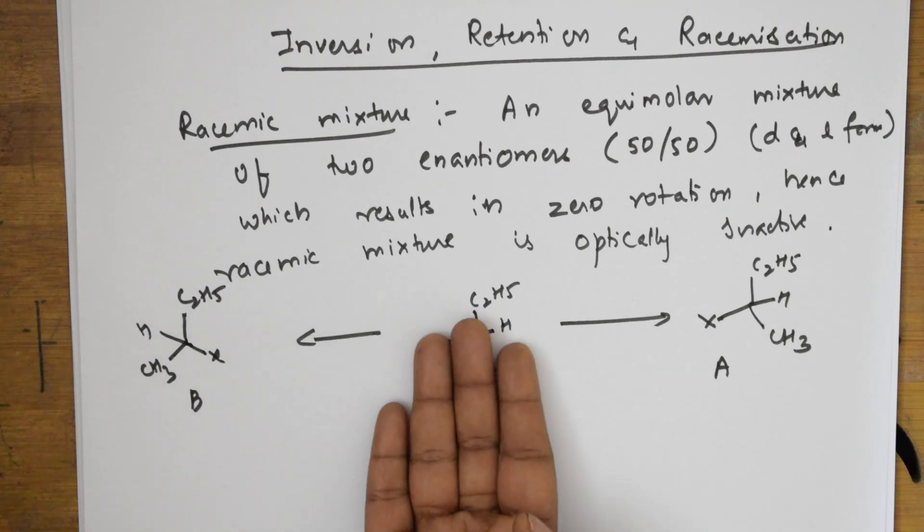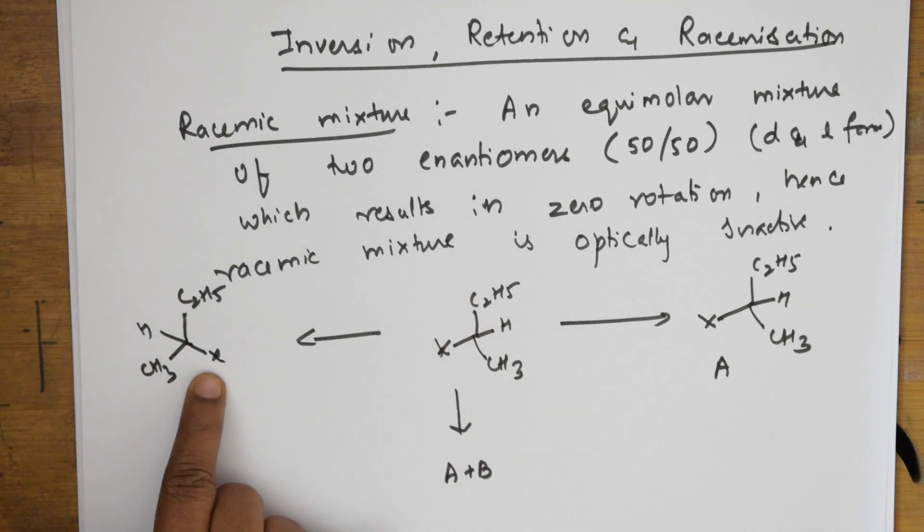In this case, the configuration is inverted. Then this is called inversion. The combination of these two is called a racemic mixture.